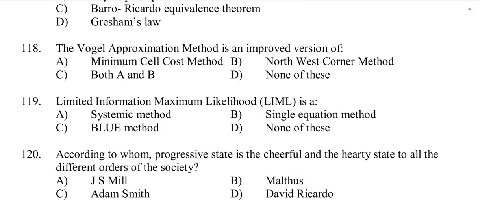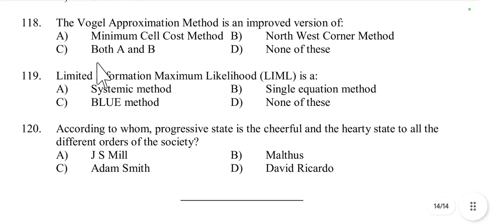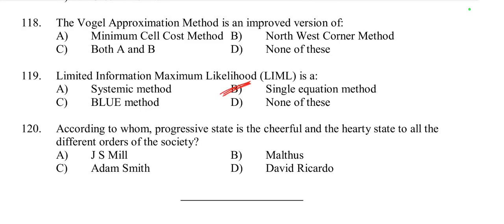Question number 118: The Vogel approximation method is an improved version — the correct option involves the minimum cell cost method and northwest corner method. Question number 119: The limited information maximum likelihood method (LIML) is a single equation method. It is used for estimating parameters in models where the focus is on a particular equation while treating other equations in the system as known, useful when dealing with endogenous regressors in a single equation context. Option B is correct.